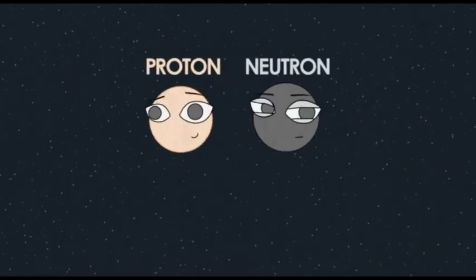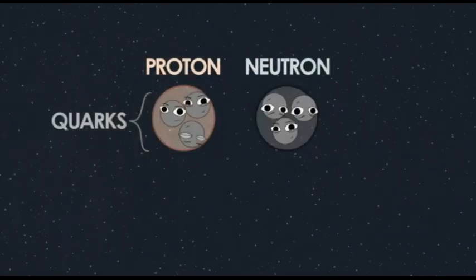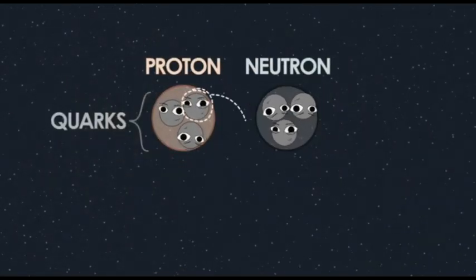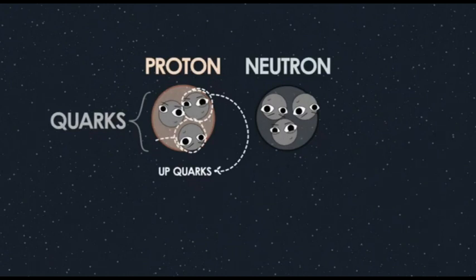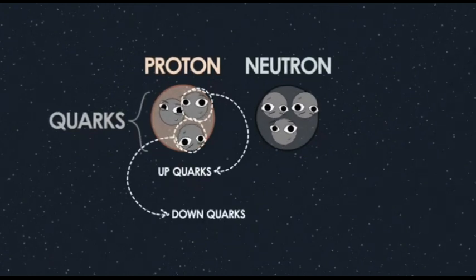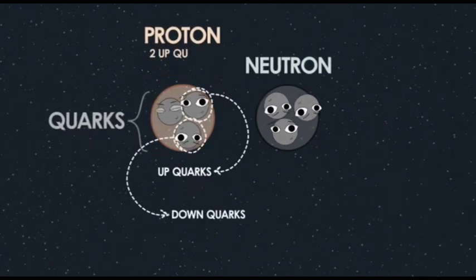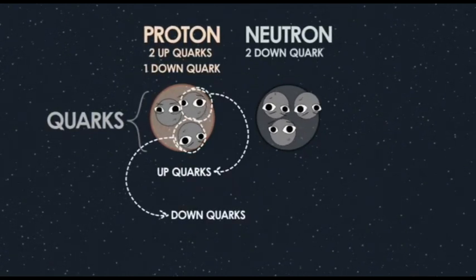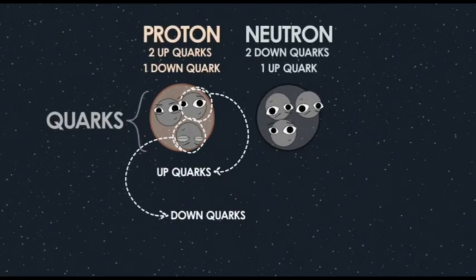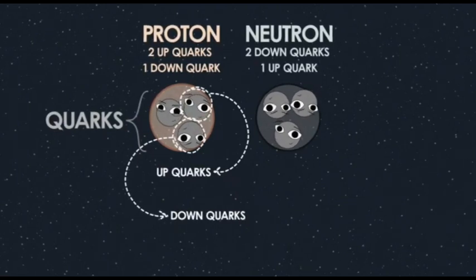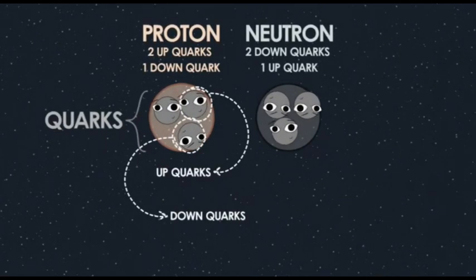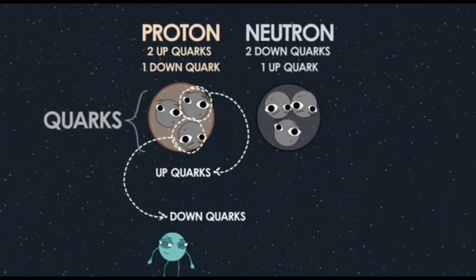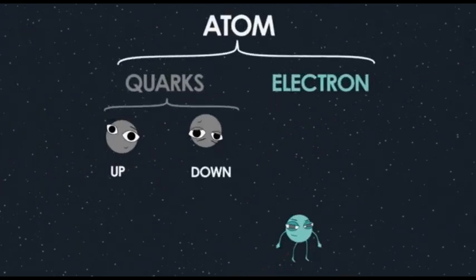Protons and neutrons are not fundamental either — they're made of quarks. Specifically, they're made of two different kinds of quarks: up quarks and down quarks. One of them is two ups and a down, and the other is two downs and an up. The point is, atoms are made of electrons and quarks.